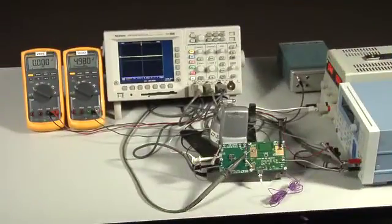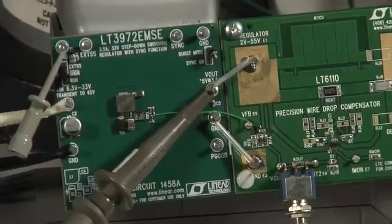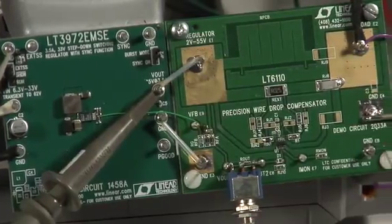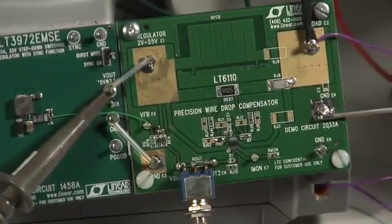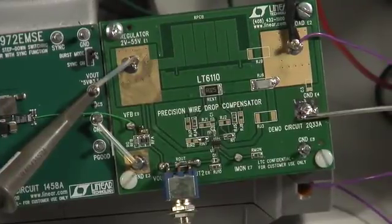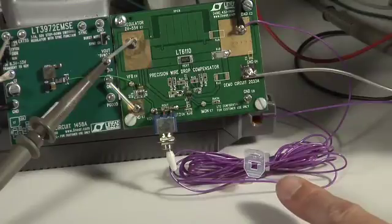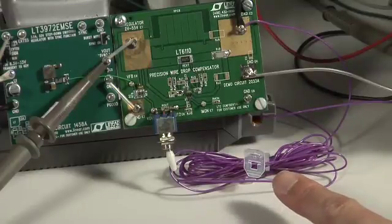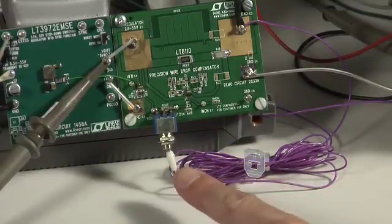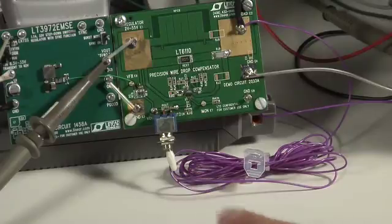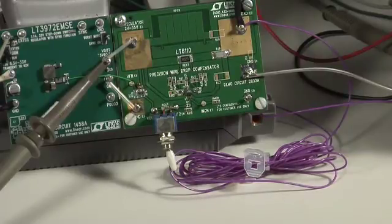Here is an example of a 5 volt power supply circuit using the LT3972 switching regulator and the LT6110 cable drop compensator. There are 10 feet of 24 gauge wire added in series with the load. A switch has been added from the output of the LT6110 to the control point of the regulator circuit to demonstrate the effectiveness of the compensation.